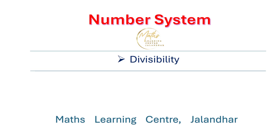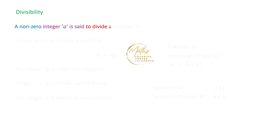In this presentation on number system, we are going to talk about divisibility. We are going to start with the definition of divisibility. If we have a non-zero integer A, then that integer is said to divide another integer B if there exists an integer C such that B is equal to A times C. Then we say that A divides B.